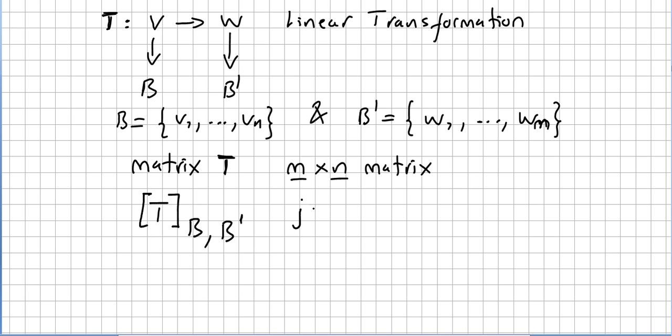The question is what is the jth column. So the jth column is going to be the transformation of Vj in B prime. This might be a bit confusing.